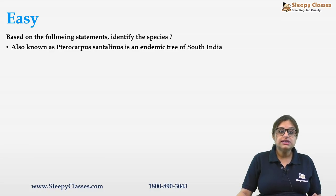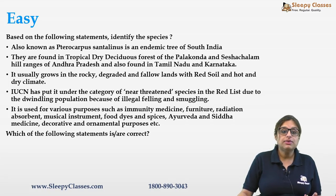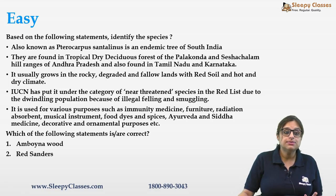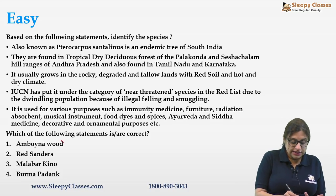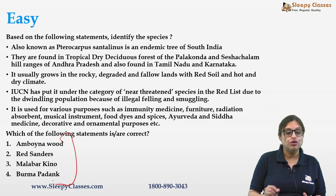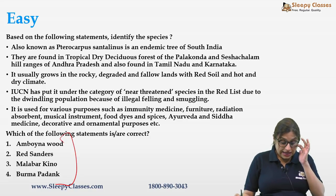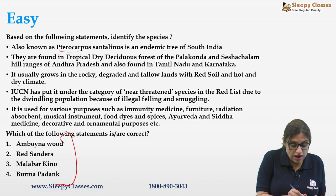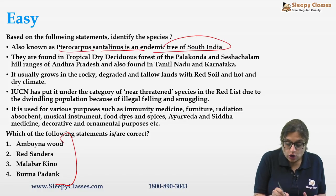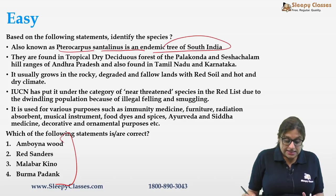Moving to the next question: you are given statements and must identify the species. The first species is Pterocarpus santalinus — Red Sanders — an endemic tree of South India. It is found in tropical dry deciduous forests of Palakonda and Seshachalam hill ranges of Andhra Pradesh, and also in Tamil Nadu and Karnataka.